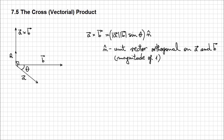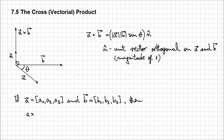If that's the form for geometric vectors, let's now see how we can express the cross product using algebraic vectors. If we have two vectors a defined by a1, a2, a3 and b defined by b1, b2, b3, then the cross product between a and b is going to be a vector with components: a2b3 minus a3b2 for the x component, a3b1 minus a1b3 for the y component, and a1b2 minus a2b1 for the z component.